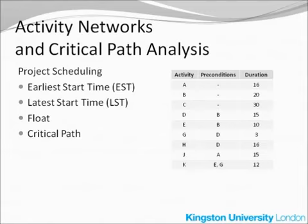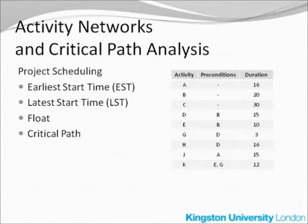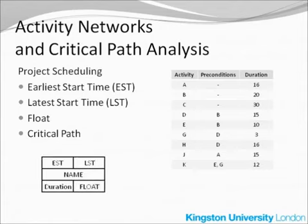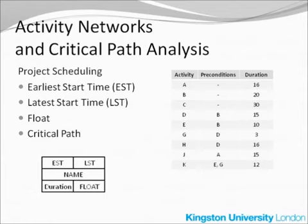One more piece of information in this table is the duration for each activity. This table will be used directly to create the activity network, in which every activity will be shown in the form of a node. For every node, you put its name or label, and four pieces of information: the duration in the lower left-hand corner, then going clockwise, EST — the earliest start time, LST — the latest start time, and finally float.